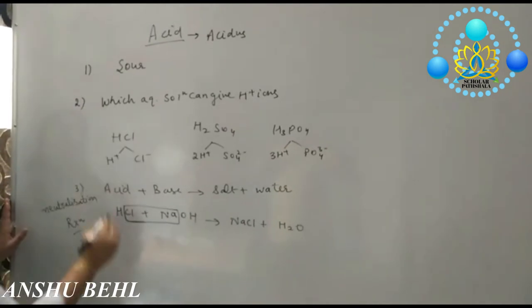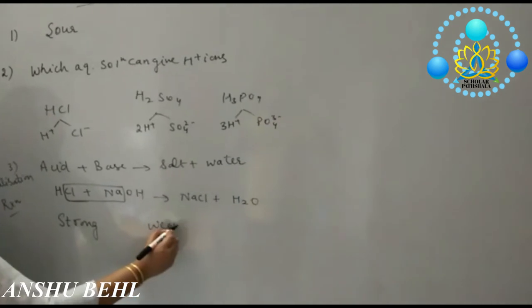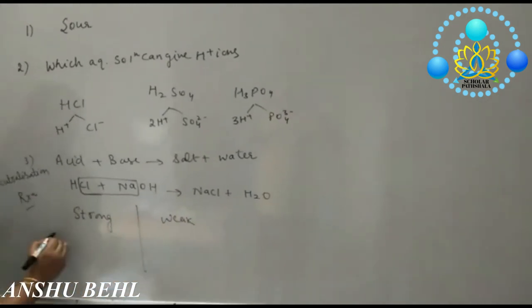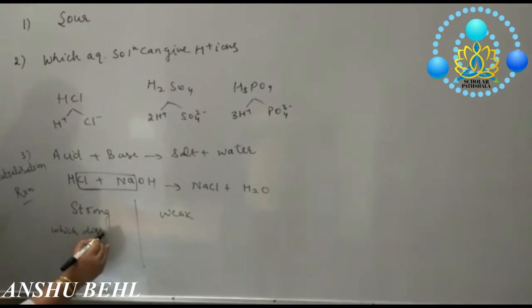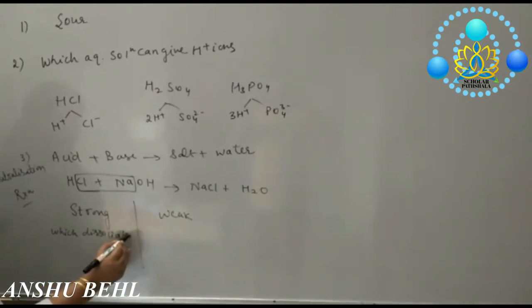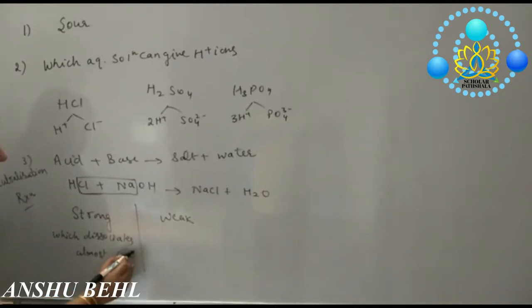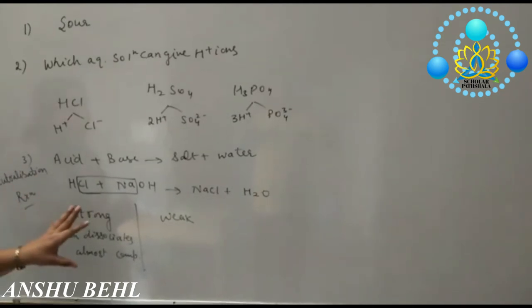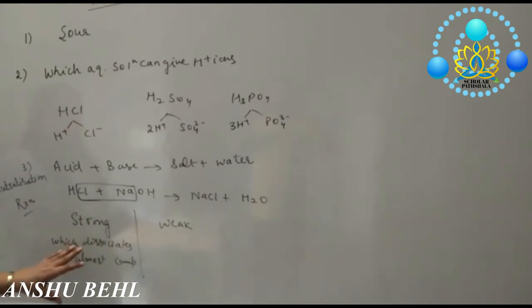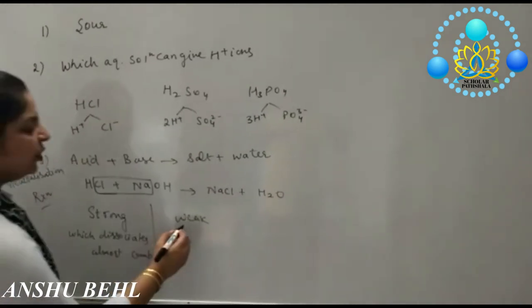This is a neutralization reaction. Acid can neutralize base. Then we have two types of acids: strong acid and weak acid. Strong acid means which dissociates almost completely. The substance which can dissociate 30% or more in aqueous solution is termed as strong acid.